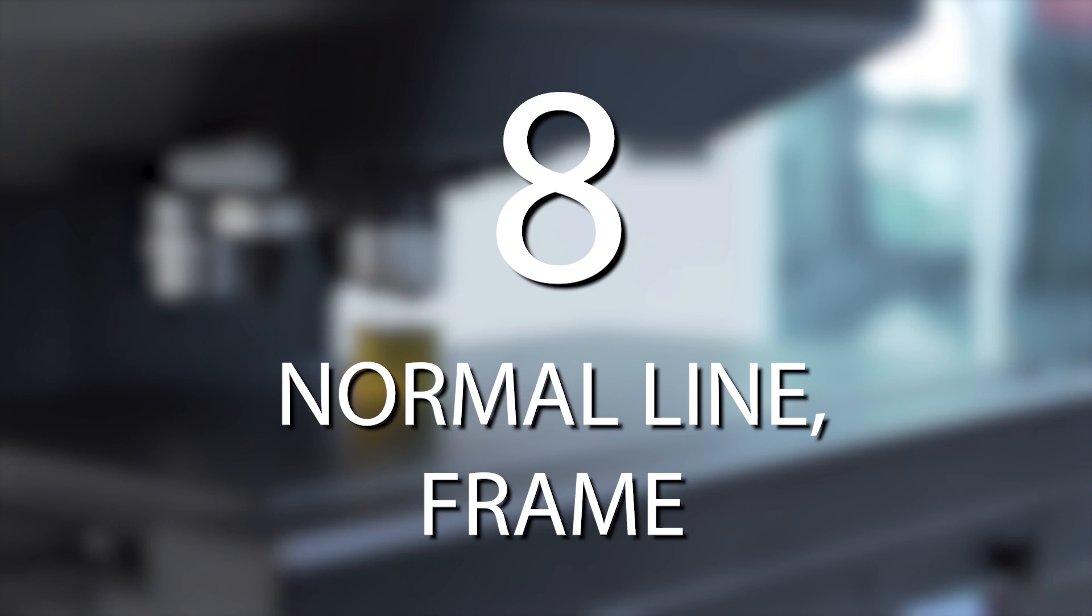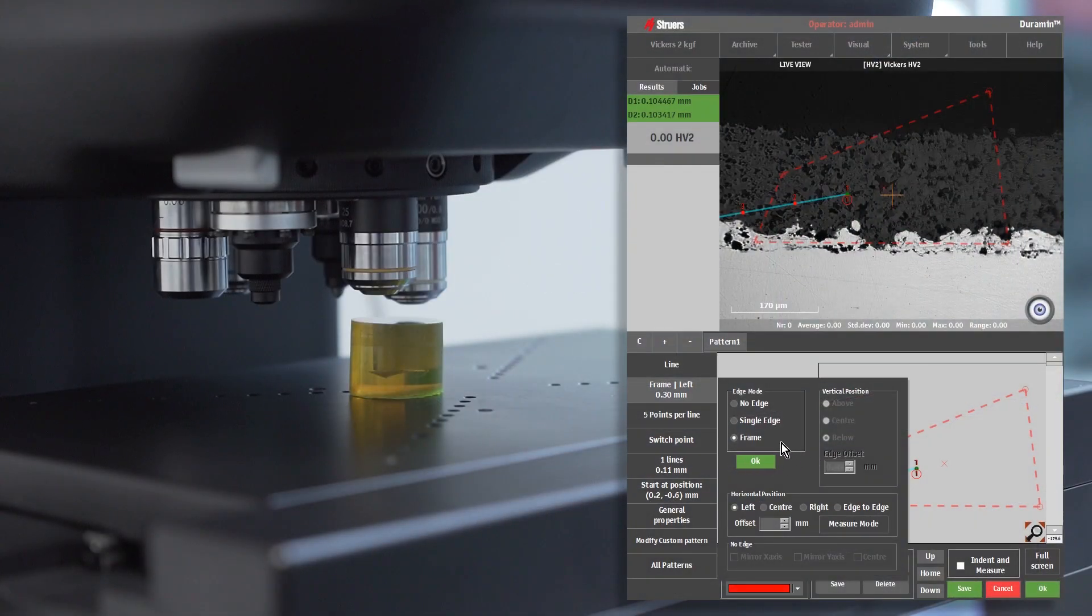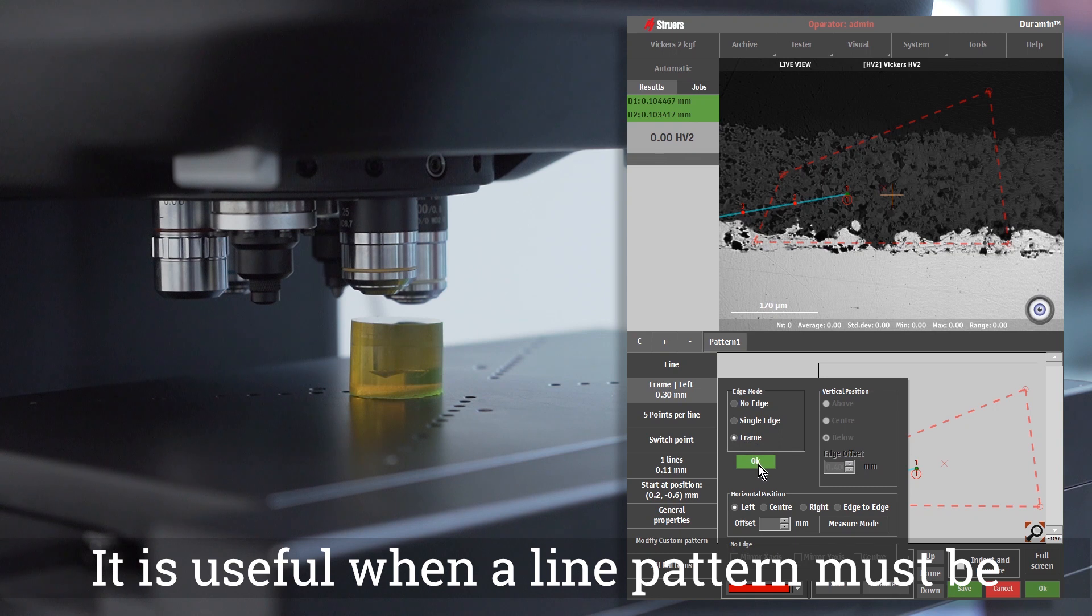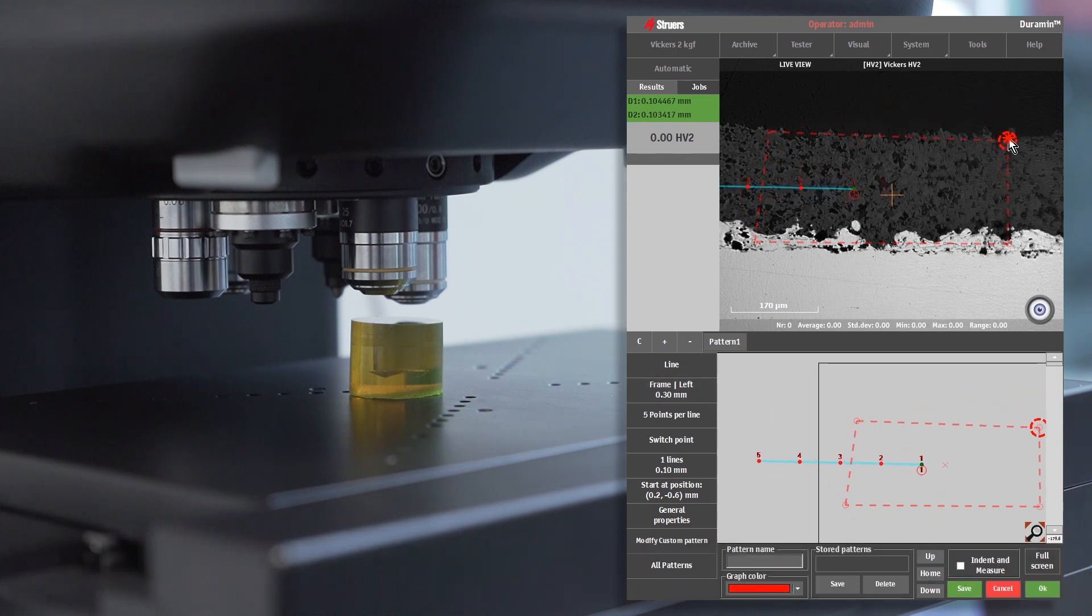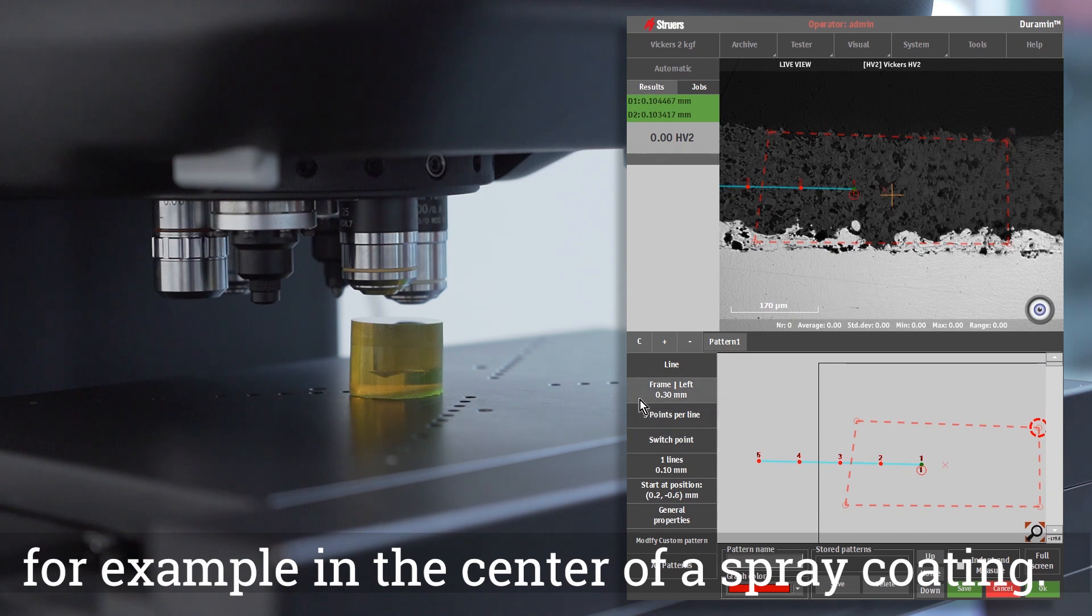Normal Line Frame. It is useful when a line pattern must be evenly distributed between two edges, for example in the center of a spray coating.